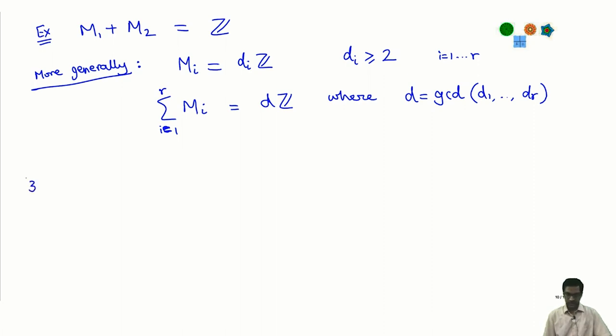This is something which is maybe something you have seen before but just put in the language of submodules other than ideals. That is the second general construction which is sums and the third construction of submodules is intersections.